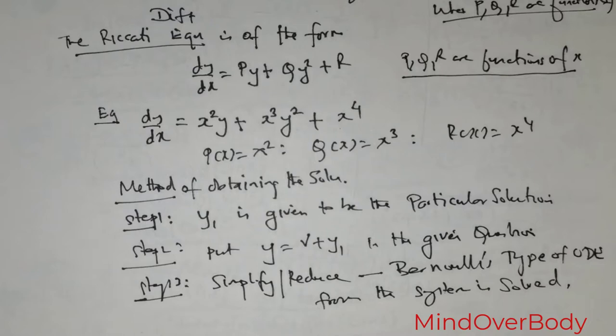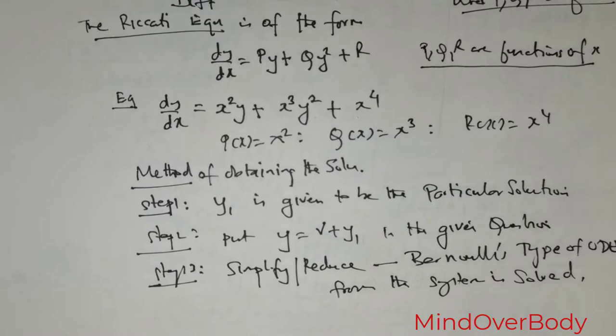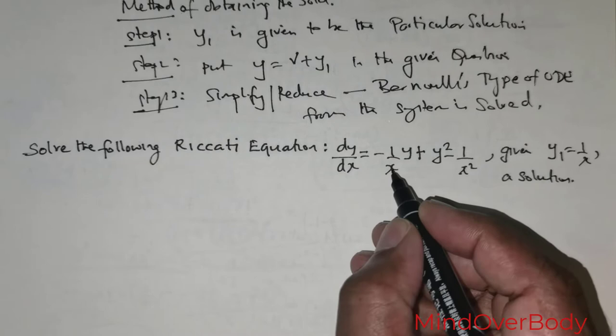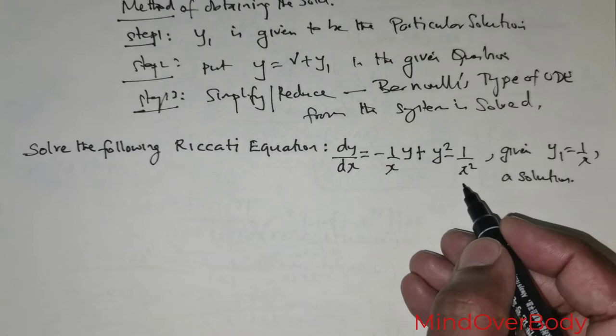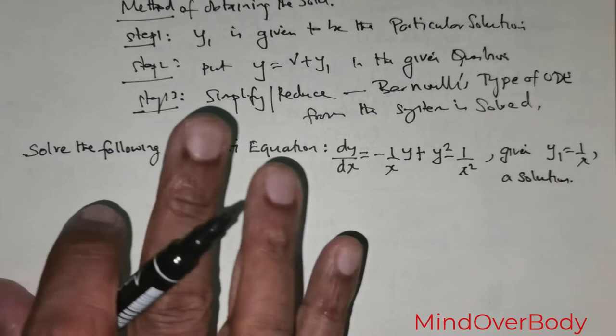It might be a little bit confusing because of the nature of the Riccati equation type, but examples will clear any element of doubt. We are given: solve the following Riccati equation, dy/dx = −(1/x)y + y² − (1/x²), given that y₁ = 1/x is a solution.